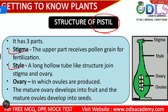We have three parts basically: stigma, style, and ovary. Stigma is the upper part — it receives the pollen grain for fertilization. The upper part which is open is the stigma. This is where the work of catching and receiving the pollen grain happens.